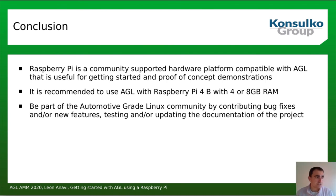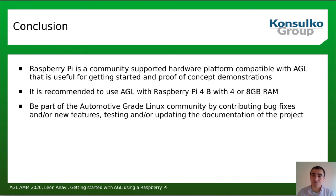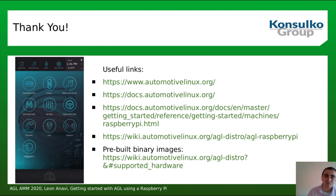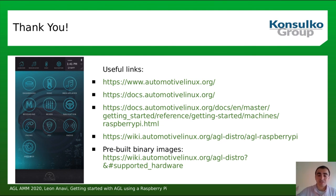To wrap up: AGL runs on Raspberry Pi — it's constrained hardware and not the best production platform, but a great way to get started with AGL and do proof-of-concept demonstrations. It's highly recommended to use Raspberry Pi 4 Model B with 4 or 8 gigabytes of RAM. I hope more and more people will join the AGL community by contributing bug fixes, adding new features, helping with testing, or updating documentation. If you just want to give AGL a try on Raspberry Pi or another supported platform, you can also download a pre-built image — the link is on the last slide — flash it to a micro SD card and boot it. Thank you very much for your attention.